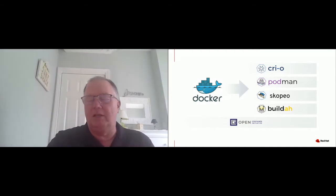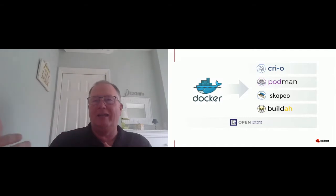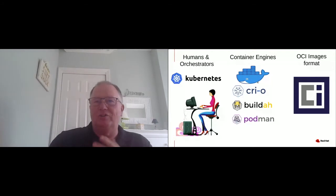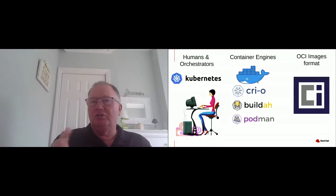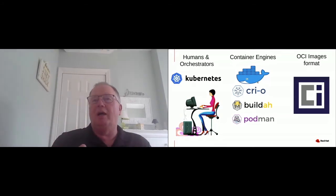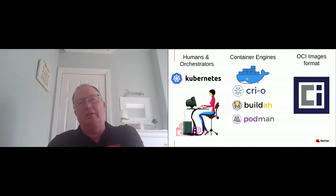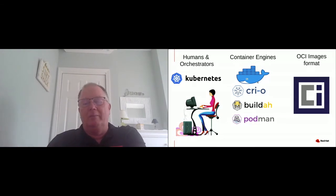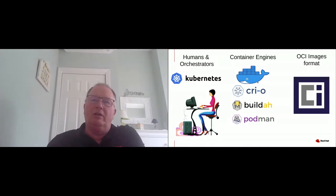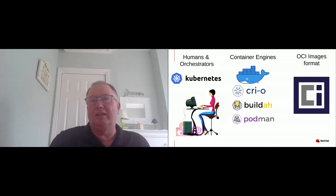The last entity is the developer building the application that runs inside the container — the person building OCI images that sit on Docker Hub or similar registries. Most of the rest of this talk is about how we could do a better job getting input from the developer: my container will run fine with these tighter security controls. Right now there's no way for the developer to give input into what security controls the application needs, and it just hasn't been built into the OCI spec at this point.